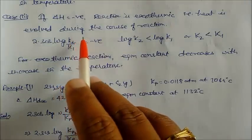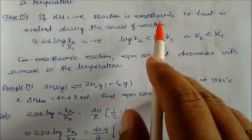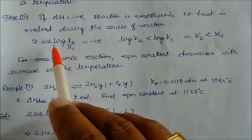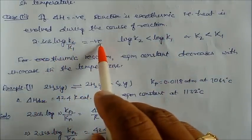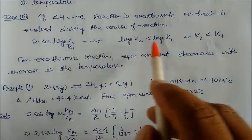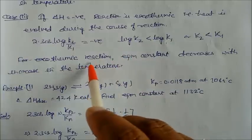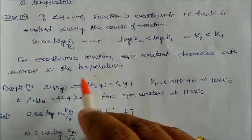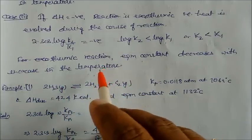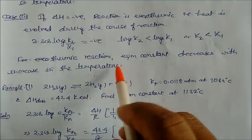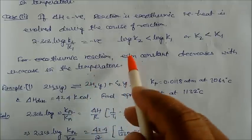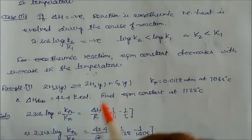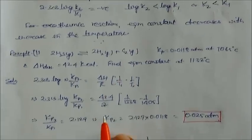Case three: if ΔH is negative, the reaction is exothermic — heat is evolved. Then 2.303 log(K2/K1) is negative, meaning K2 < K1. The equilibrium constant decreases with increasing temperature. For endothermic reactions, Kc increases with temperature; for exothermic reactions, Kc decreases with temperature. Keep this distinction in mind.